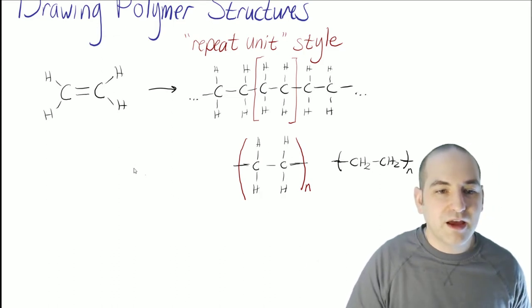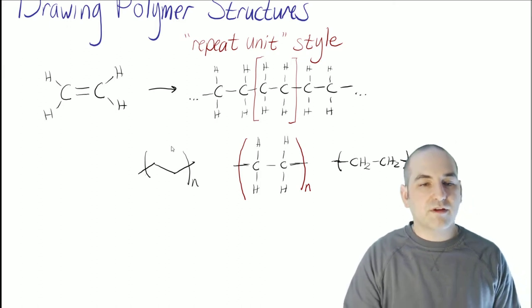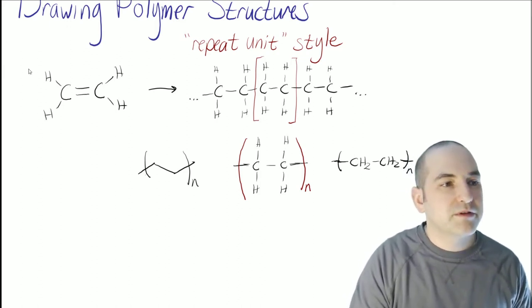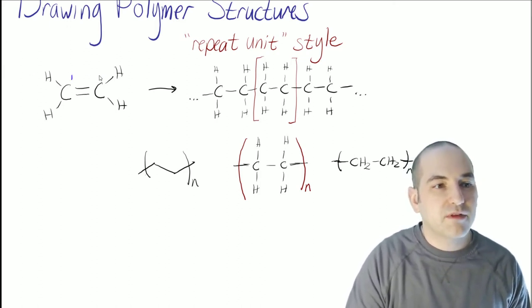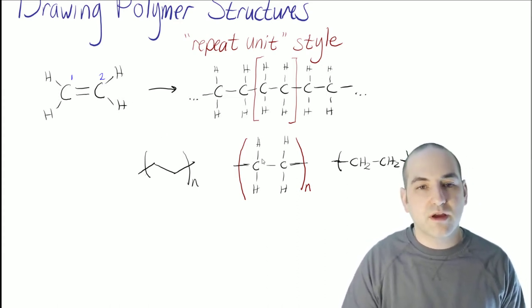And then we can do that in a line structure as well. So this is often the most difficult for people to kind of get their head around. So to explain this, let's look at the carbon. So our monomer is made from two carbons. And that's where the repeat unit is going to come from.